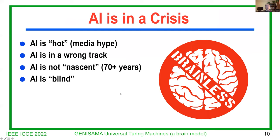I'd like to raise that AI is currently in a crisis, although not many people agree with me. AI is very hard, but mainly from media hype. AI is a long track. AI is not nascent, as many people say, because AI already has over 70 years of history. And AI is largely blind at this point. And AI is brainless. My model is probably the first model about the brain. So the brainless time of AI is over.